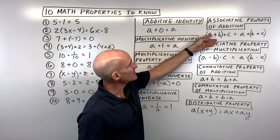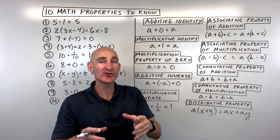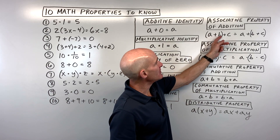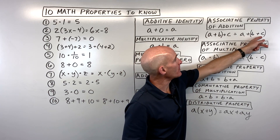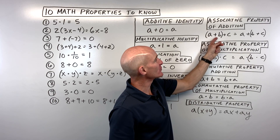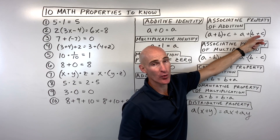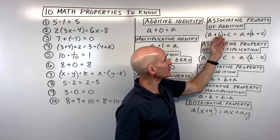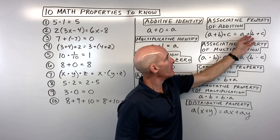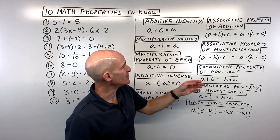The associative property of addition — 'associative' is like who you associate with, your group of friends. Notice a, b, and c are in the same order, but we're grouping or associating the first two quantities in parentheses here, and the last two quantities in parentheses there. You'll still get the same answer either way. That's the associative property of addition.